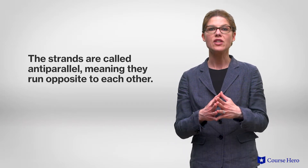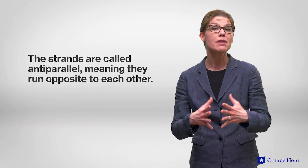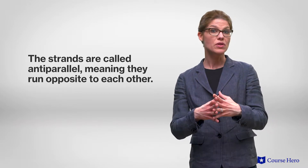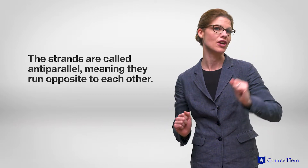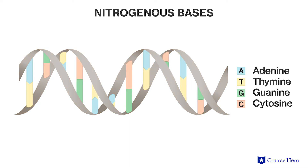The two sugar-phosphate backbones in a DNA molecule are said to be anti-parallel because their subunits run in opposite directions to each other. The nitrogenous bases stick out from each of the two sugar-phosphate backbones and pair up to form what are called complementary base pairs, forming what looks like steps on a ladder.